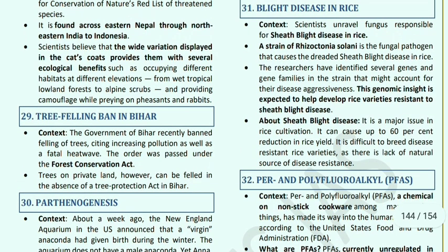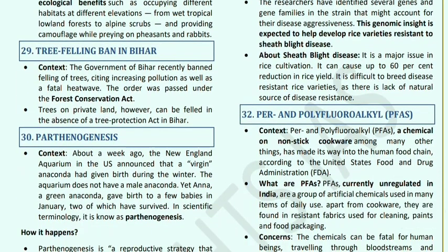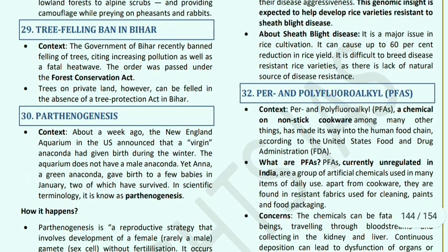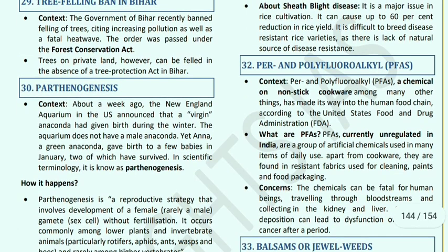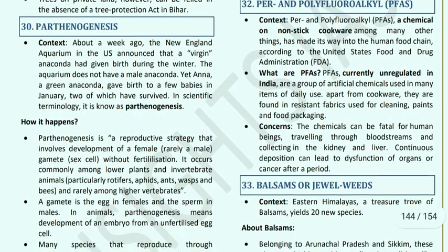Parthenogenesis: an England aquarium in the US observed a virgin anaconda that gave birth to a green anaconda during winter, despite no male anaconda being present in the facility. Only two of the babies survived. This is called parthenogenesis — a strategy where a female can reproduce without a male. It can fertilize without a male. This phenomenon is also found in lower plants and invertebrates.